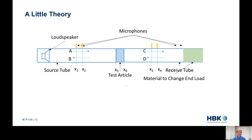Looking closer at the theory of the impedance tube: at one end we have a loudspeaker — a simple five-watt, three-inch loudspeaker — that produces what we call a right-traveling wave, and a left-traveling wave if there's a reflection back from the test article. On the receiver side we have a right-traveling wave with amplitude C, and if the end condition isn't perfectly anechoic, we have a reflected back wave D. So we have four unknowns: A, B, C, and D, all with amplitude and phase that need to be measured to characterize our test article.